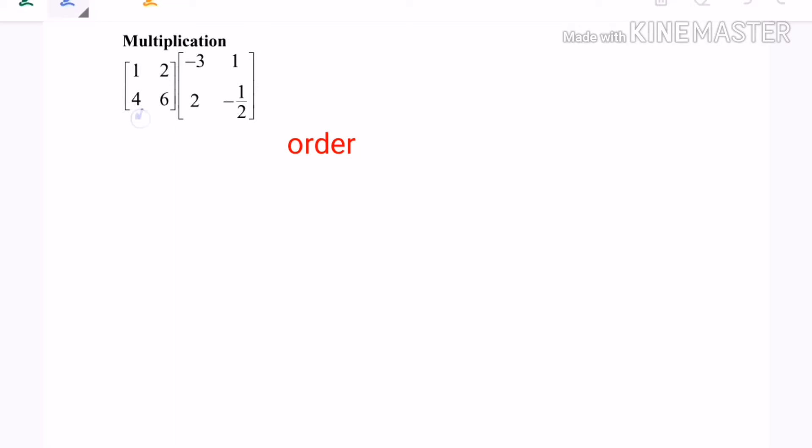So for this one, let's say it's matrix A. The order of matrix A is 2 by 2. Let this one be matrix B. The order of matrix B is 2 by 2.